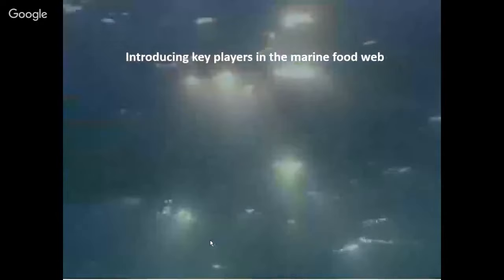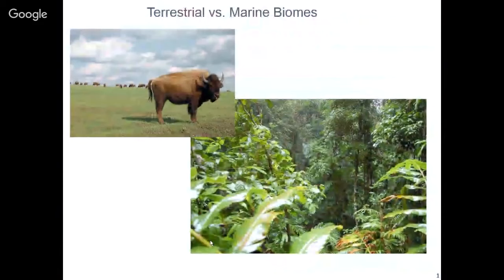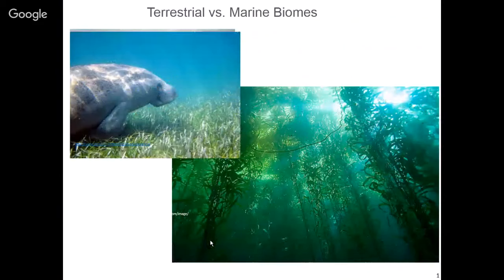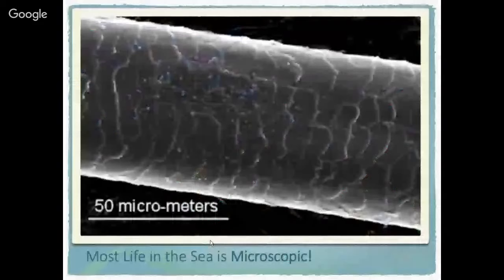Let's introduce the key players in the marine food web. Comparing to the terrestrial world — we have forests and grasslands, and similarly in the ocean we have kelp forests and sea grasses. But these are incredibly important habitats only found near shore, and they contribute very little to the total productivity of the ocean. In terms of overall productivity and how much life in the ocean gets fed, these contribute very, very little. What's actually doing it are the phytoplankton — the plants of the sea — which are microscopic.